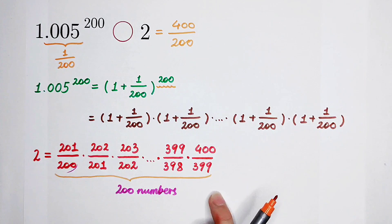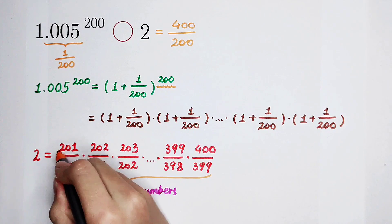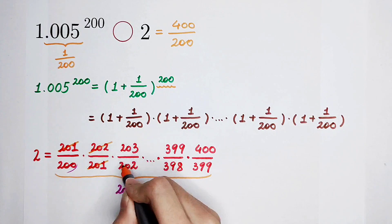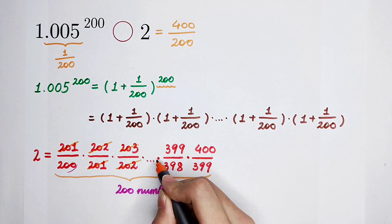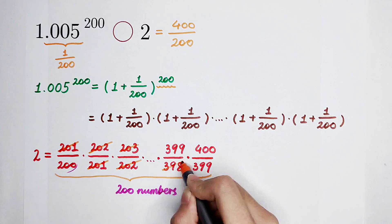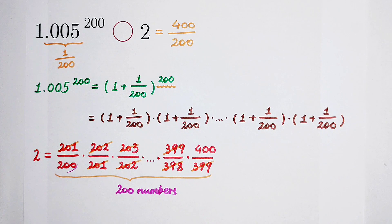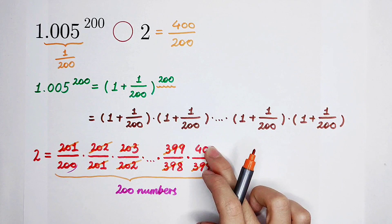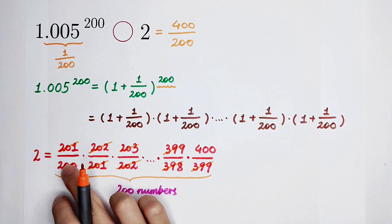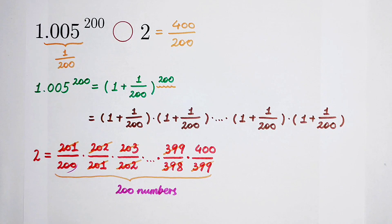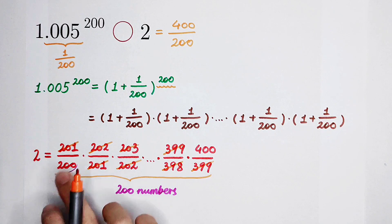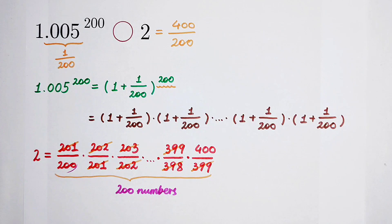And this term is equal to 2, because cancel, cancel, cancel, cancel, and cancel, and so on. This, cancel, cancel, cancel. So what's left? 400 on the numerator, and 200 on the denominator. And the division of 400 and 200 is 2, just as this.